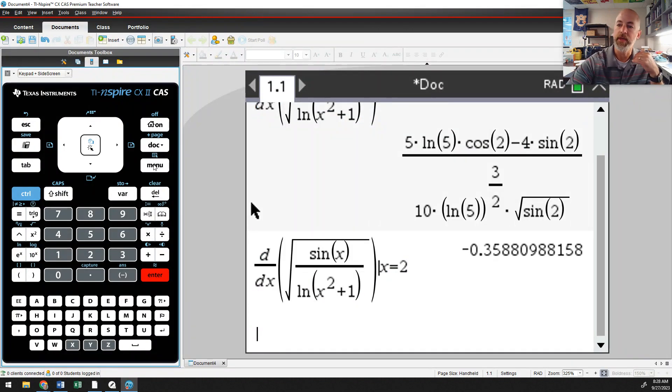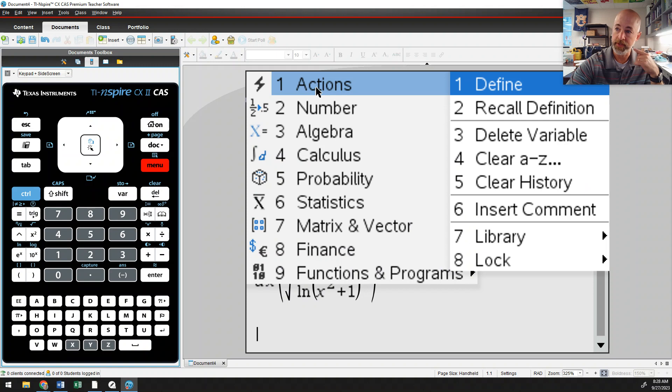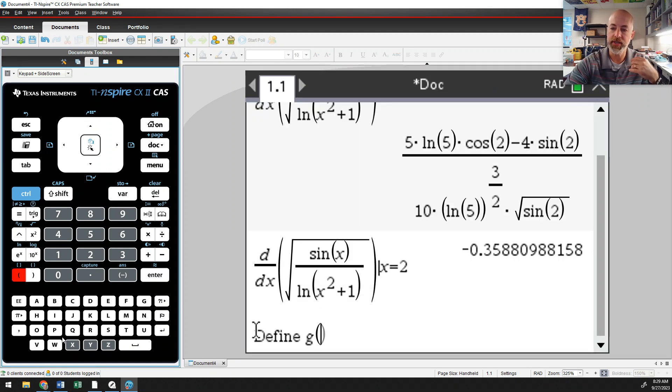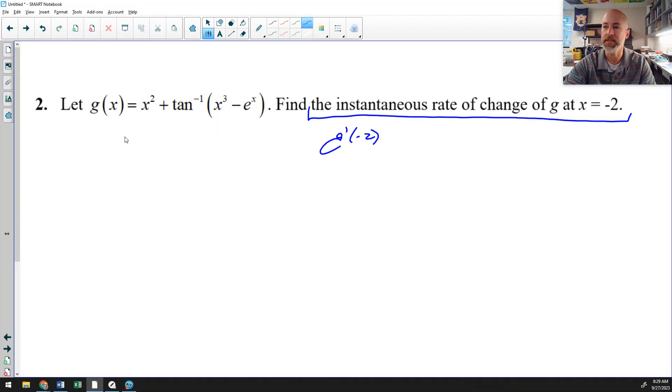So back to the Nspire, if you hit menu, this is under actions. This is not a calculus command. We want to define, and it asks you what you want to define. And I'm going to define g of x to be, and I'll just type in g of x equals in the equation, which is x squared.